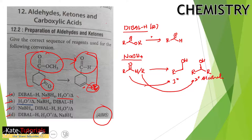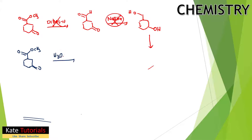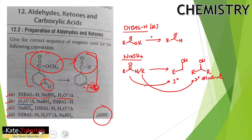In option B, acidic hydrolysis (H3O+) with heating is applied first to the ester and ketone. Acidic hydrolysis will convert the ester to a carboxylic acid (COOH), while the ketone remains unchanged.